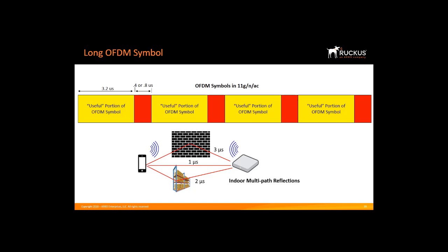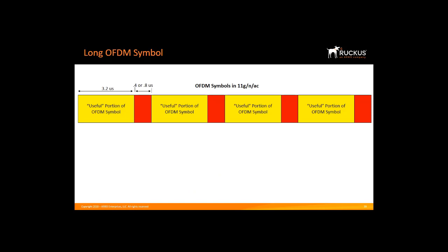The reflections are called multipath. How much multipath I can tolerate is dictated by how wide the guard interval is. The Wi-Fi standard was originally developed for indoor use. When indoors, multipath is not going to be very long — reflections off walls are short and you don't notice them. But outdoors, voice or signals reflect off objects like buildings or hills much further away, so the multipath is much longer outdoors.